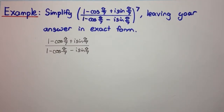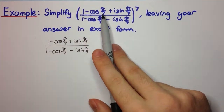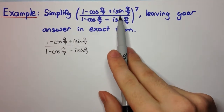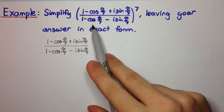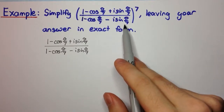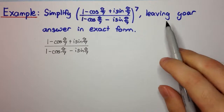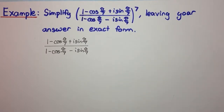Welcome to today's video. In this video we'll be seeing another application of De Moivre's theorem to a question. The problem is: simplify (1 minus cos(π/7) plus i·sin(π/7)) all over (1 minus cos(π/7) minus i·sin(π/7)), raised to the power 7, leaving your answer in exact form.